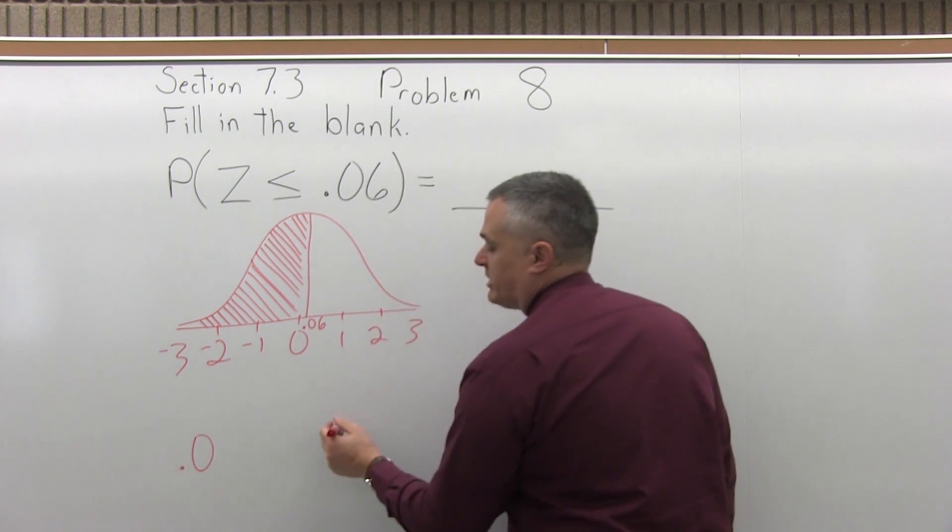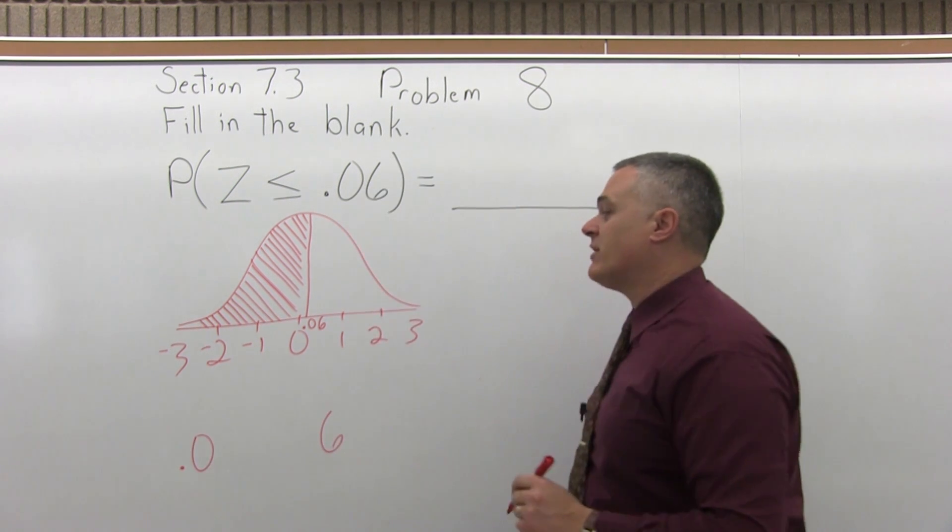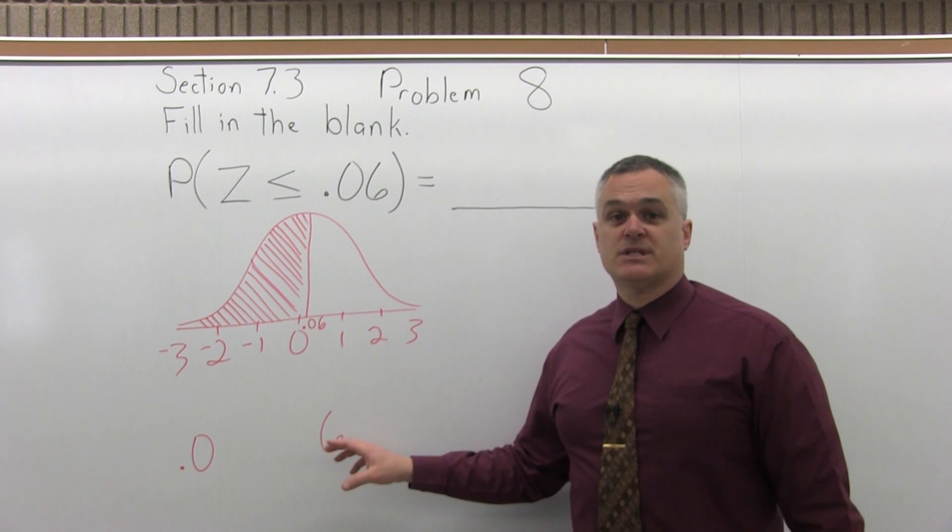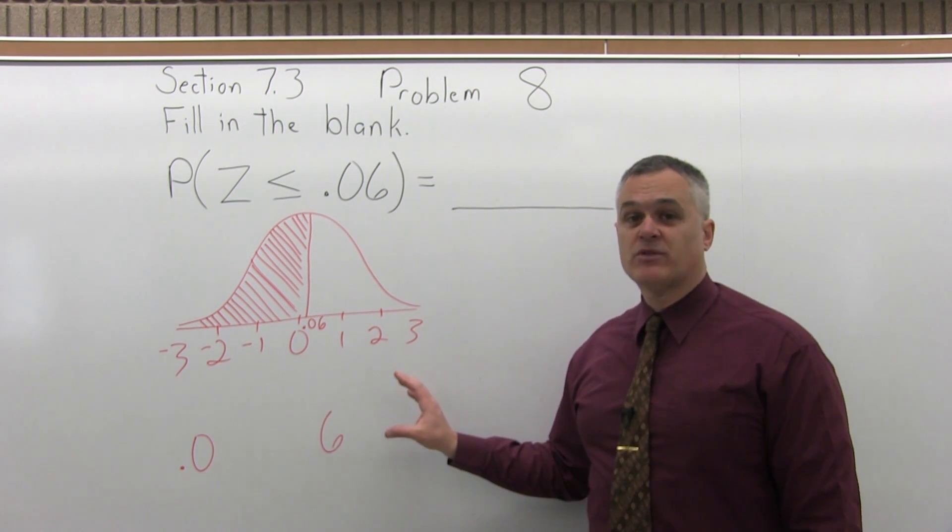The second step is split the number into two parts by pulling off the rightmost digit, which is the 6. So we'll take the 6, pull it off to one side.